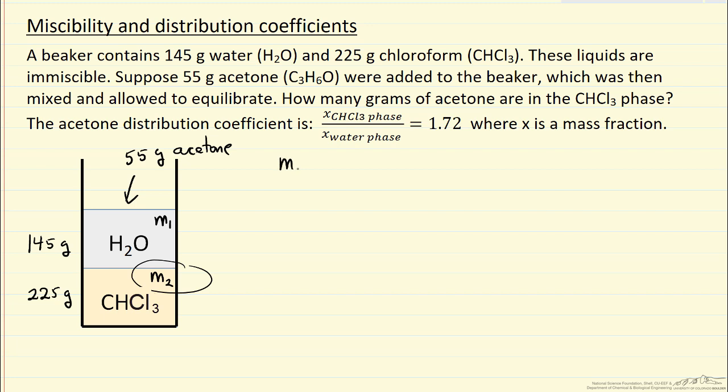Of course, M1 plus M2 equals 55 grams. And so we'll use that information plus this distribution coefficient, normally written as K.